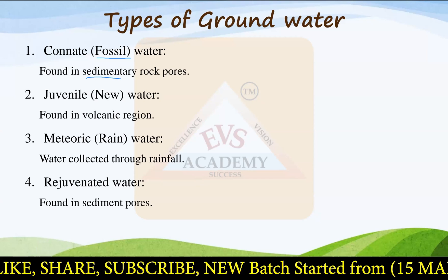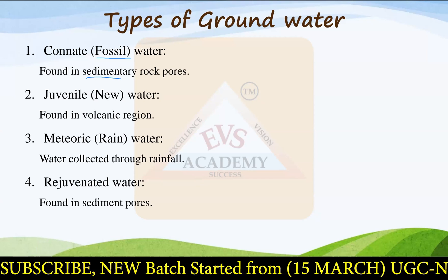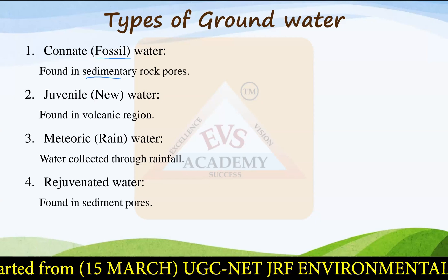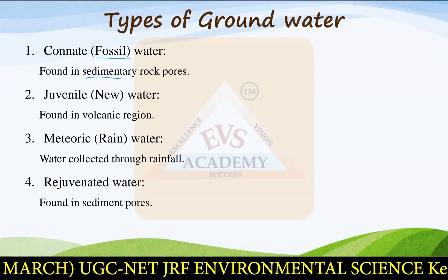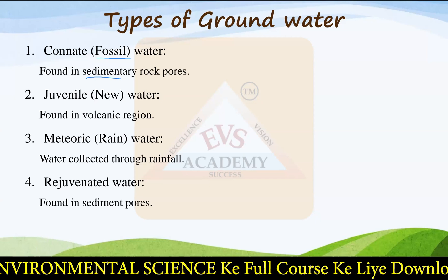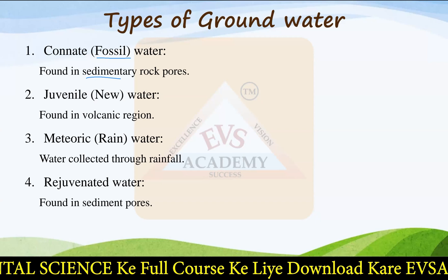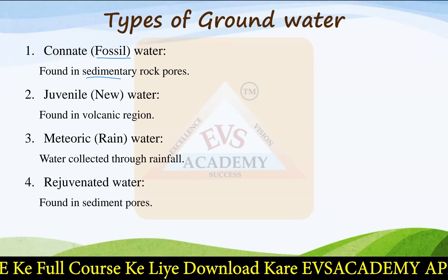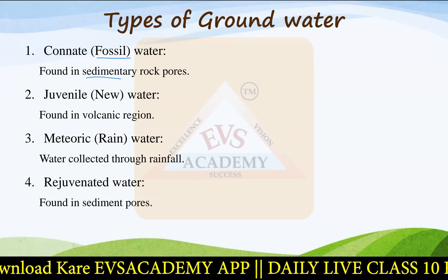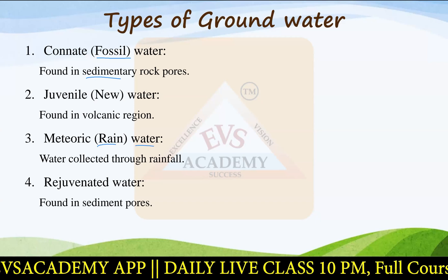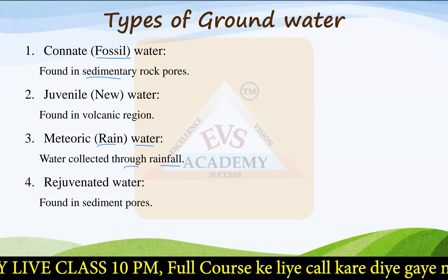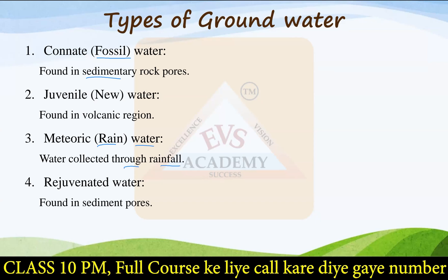The second type of groundwater is juvenile water, also called new water. This is found in volcanic regions because volcanic rock is a new type of rock. In the pores of volcanic rocks, you can find some water, which is termed juvenile water or new water. Then we have meteoric or rainwater, which is collected with the help of rainfall only. That type of water is termed meteoric or rainwater.